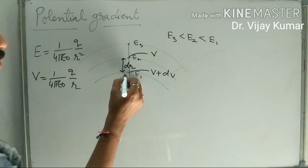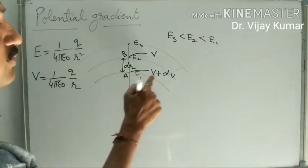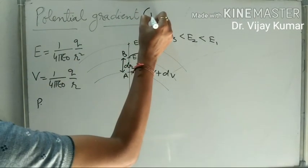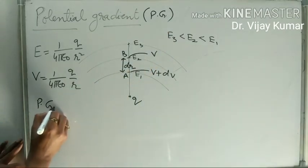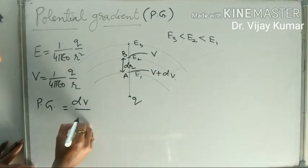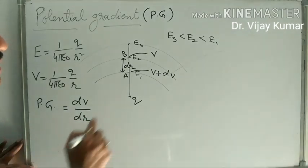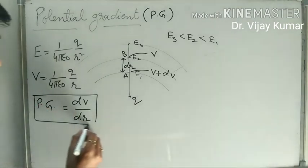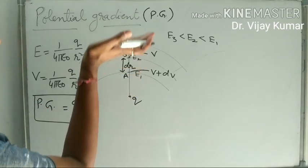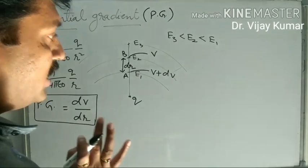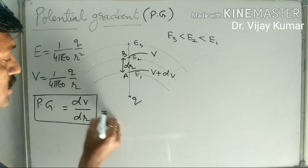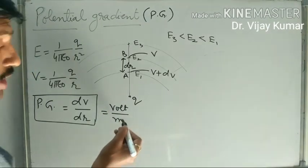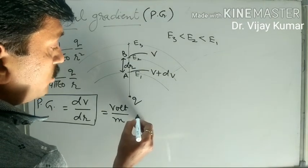When we move from point A to point B, potential decreases from V plus dV to V. Potential gradient is the rate of change of potential with distance in an electric field, represented as dV upon dr. As distance increases, potential decreases inside the electric field. The unit of potential gradient is volt per meter.